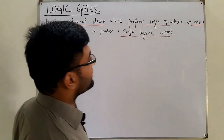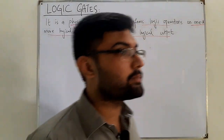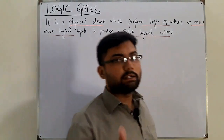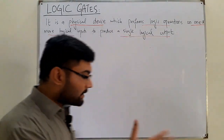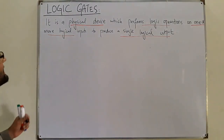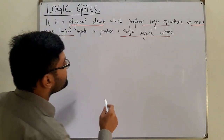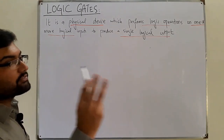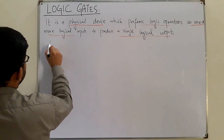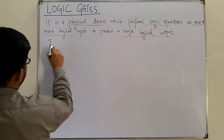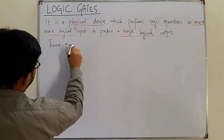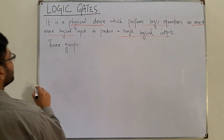These logic operations may include the AND operation, the OR operation, and inversion. We'll see that with the passage of time. But first, note that logic gates are basically divided into three categories.